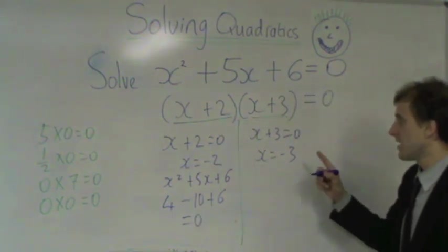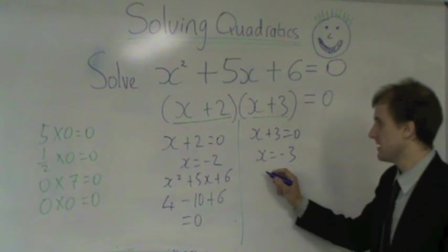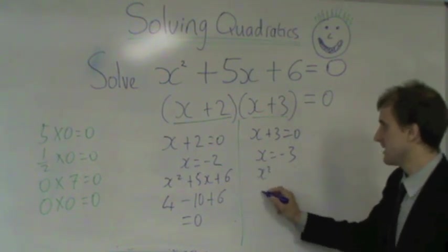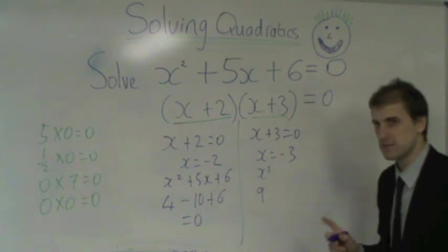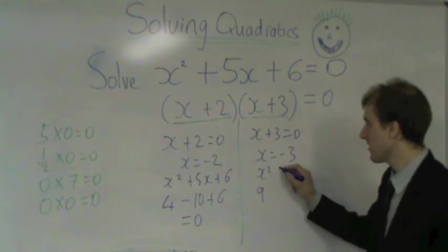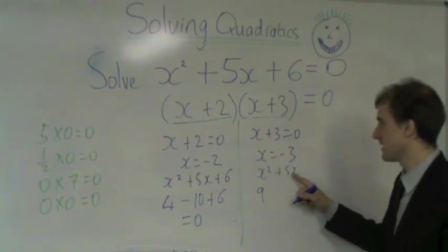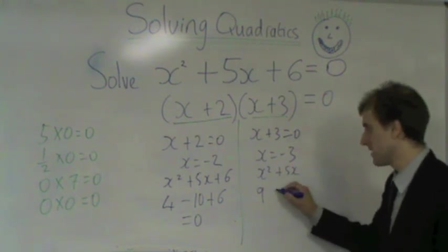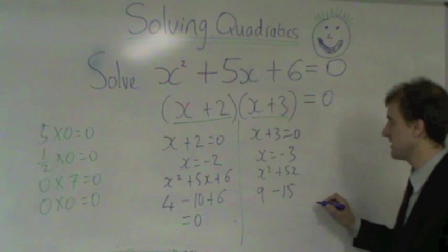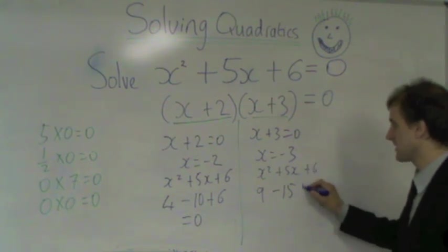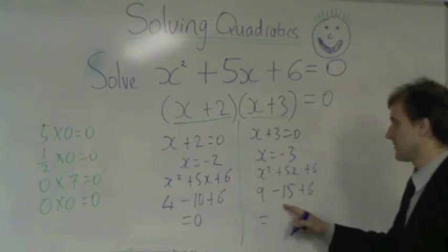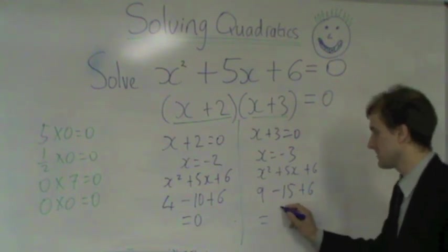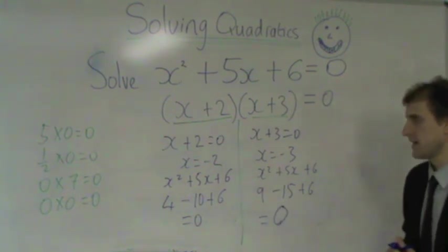And on this side, I've got minus 3 squared in the x squared, which gives me 9, because minus 3 times minus 3 is plus 9. I've got plus 5x is going to be plus 5 times minus 3, so 5 times minus 3 is minus 15. Plus the constant plus 6 on the end. 9 minus 15 is minus 6 plus 6. That does make zero, as required.